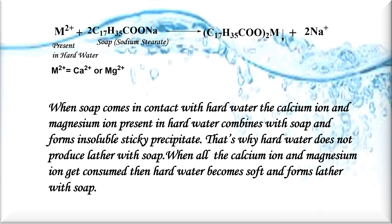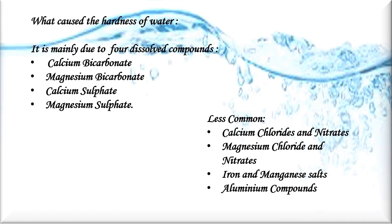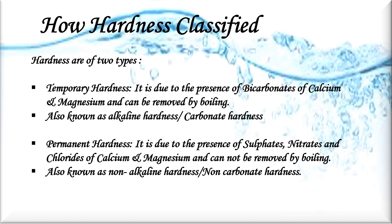When soap comes in contact with hard water, the calcium ions and magnesium ions present in hard water combine with the soap and form insoluble sticky precipitates. That is why hard water does not produce lather with soap. When all the calcium and magnesium ions are consumed, the hard water becomes soft and forms lather with soap. The major cause of hardness is mainly due to four dissolved compounds: calcium bicarbonate, magnesium bicarbonate, calcium sulfate, and magnesium sulfate. Less common reasons include calcium chlorides and nitrates, magnesium chloride and nitrates, iron and manganese salts, and ammonium compounds.